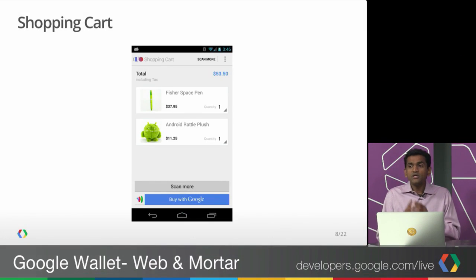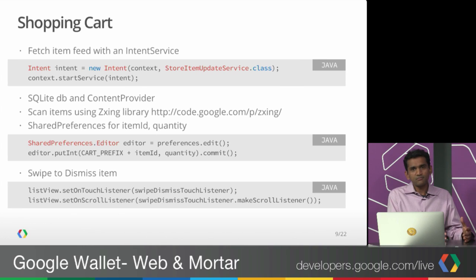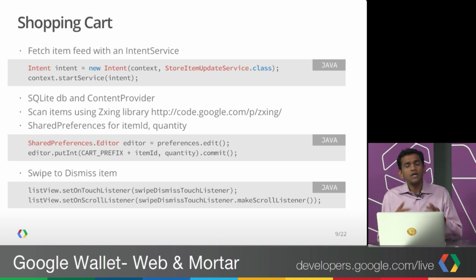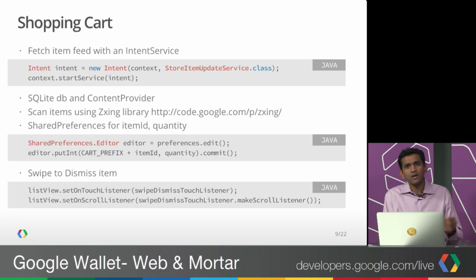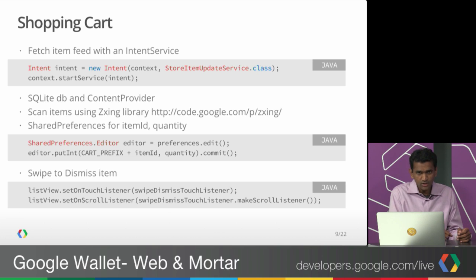Now let's look at how the other parts of the app were built. The shopping cart is one of the most interesting aspects of the entire app. The first thing was to fetch an item feed. Since the number of items in the catalog was very limited, we fetched the entire catalog from the server using an IntentService. This was then stored in an SQLite database, and a content provider was set up to make it clean to access these items. The scanning of items was done using Zebra Crossing, which is an open source library you can download and use — it's a great library for QR codes, barcodes, and any sort of codes.